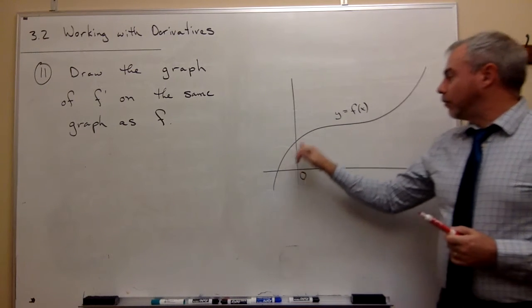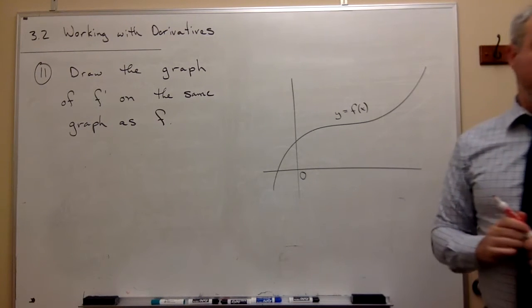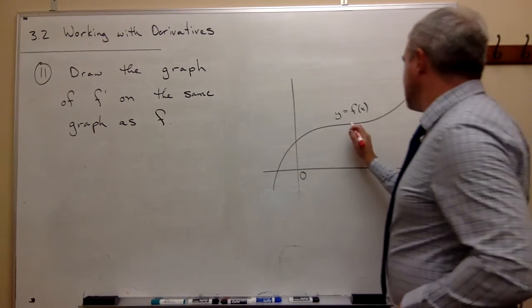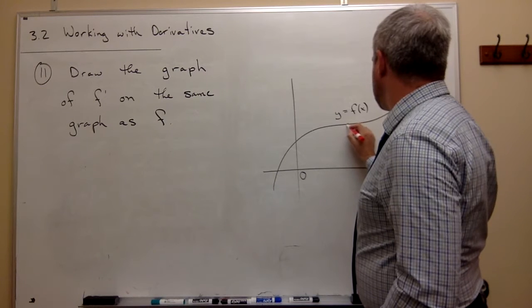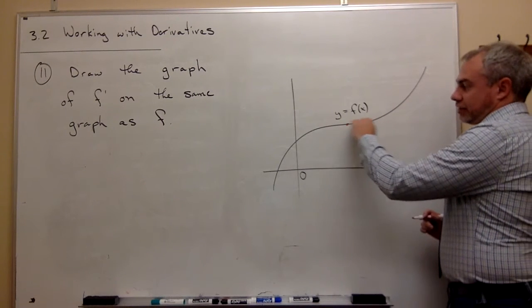So what we're looking for here are places where, first of all, I want to say okay is there anywhere where the slope of this function is horizontal? And you can see there's maybe a place right in here somewhere where the slope is actually zero, I have a horizontal slope.